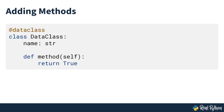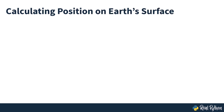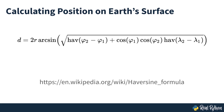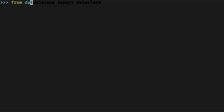You already know that a data class is just a regular class. This means you can freely add any methods you want to that class. As an example, let us calculate the distance between one position and another along the Earth's surface. One way to do this is by using the haversine formula. You can add a distance_to method to your data class just like you can with normal classes.